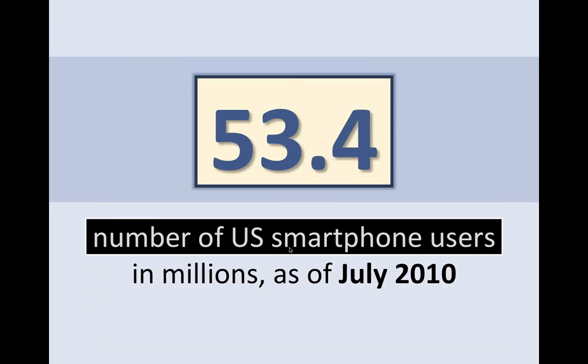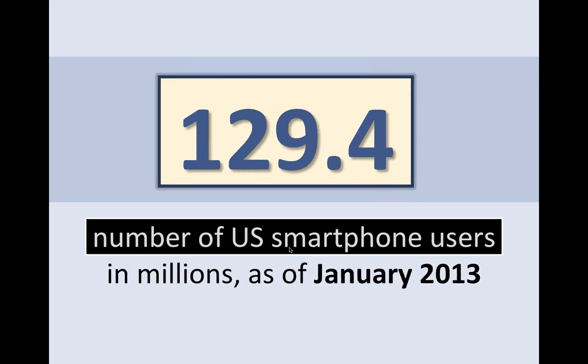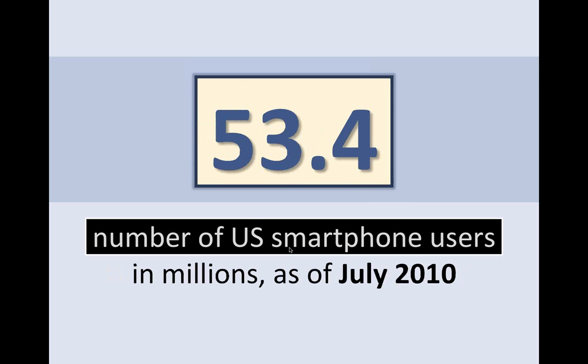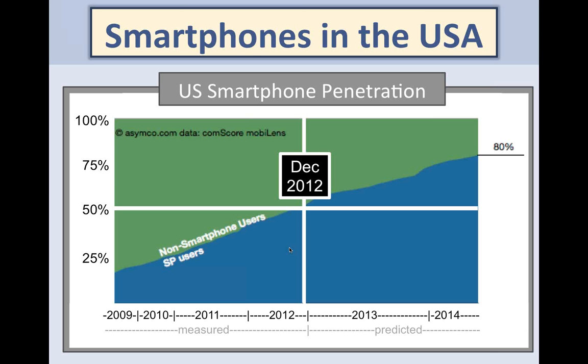When I started on this, people would say, 'What does it matter — how many people have smartphones?' The number as of July 2010 was in the millions, and the best estimate as of January of this year shows that in about two and a half years the market went from that to this. Around December of last year, 50% of cell phone users had smartphones. If you look at the projections, by the middle of next year 80% of cell phone users will have smartphones. It's now about half the population of the U.S. — a huge thing that's not going away.